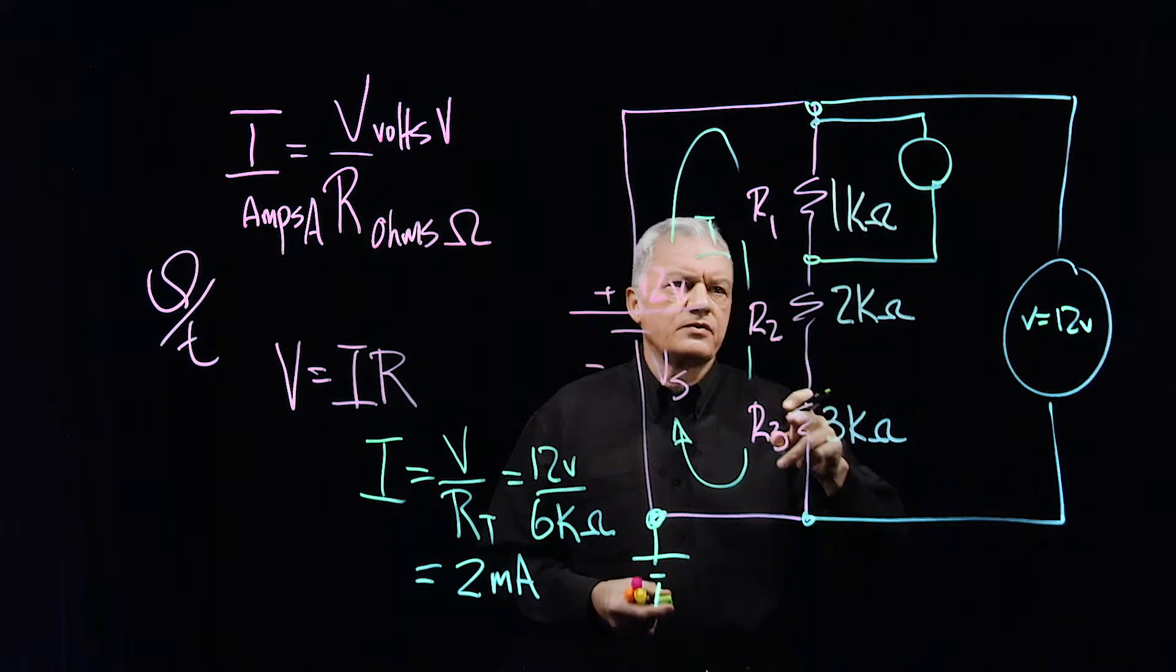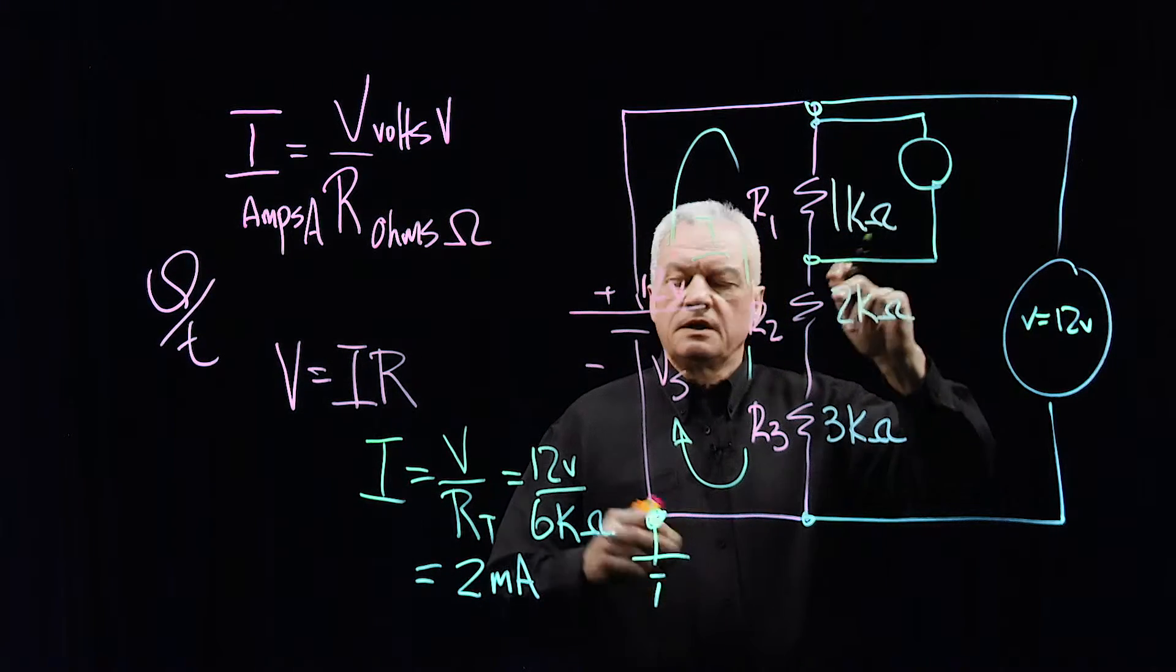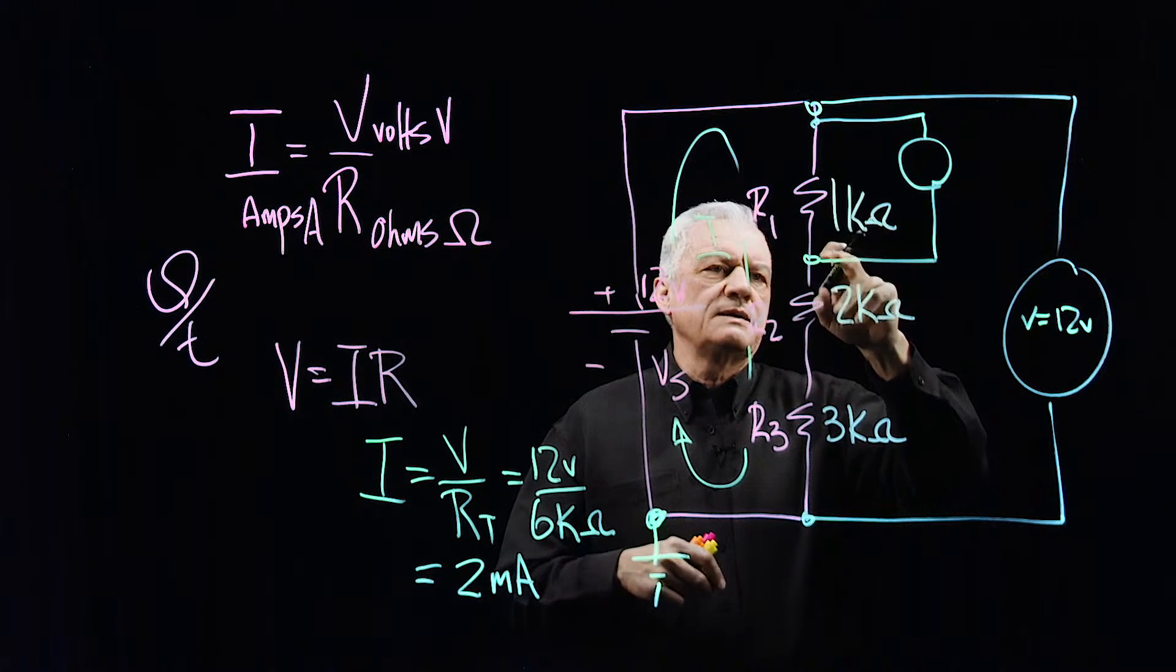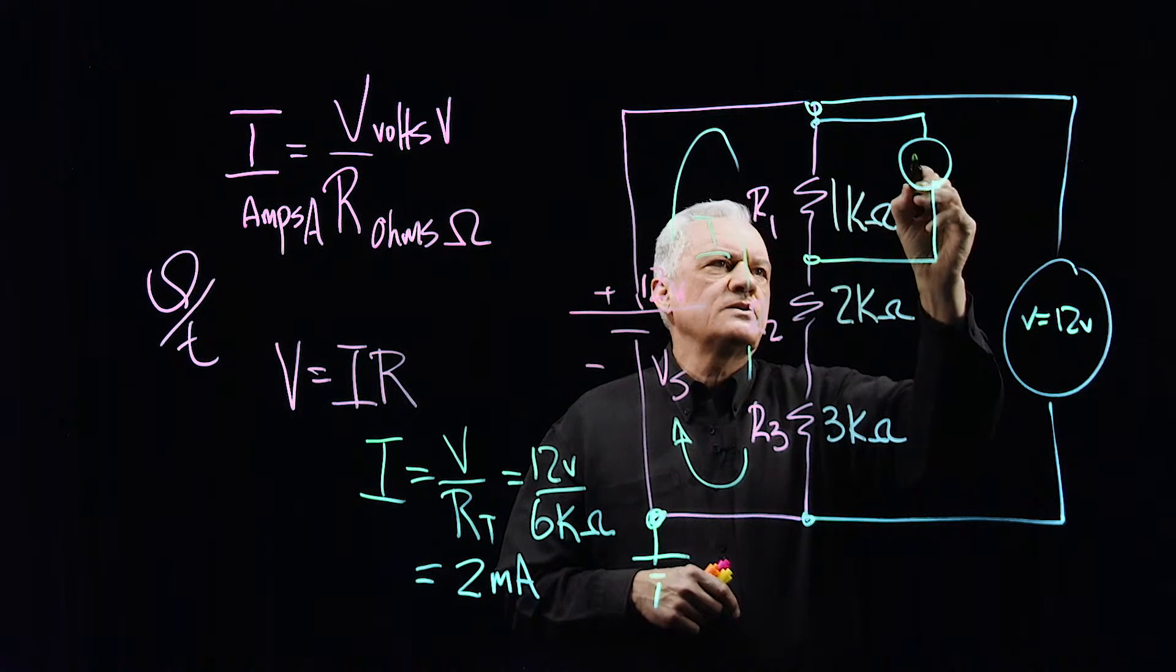Well, we have 2 milliamps running through 1,000 ohms. So 2 times 10 to the minus 3 times 1 times 10 to the 3, that's going to give us 2 volts.